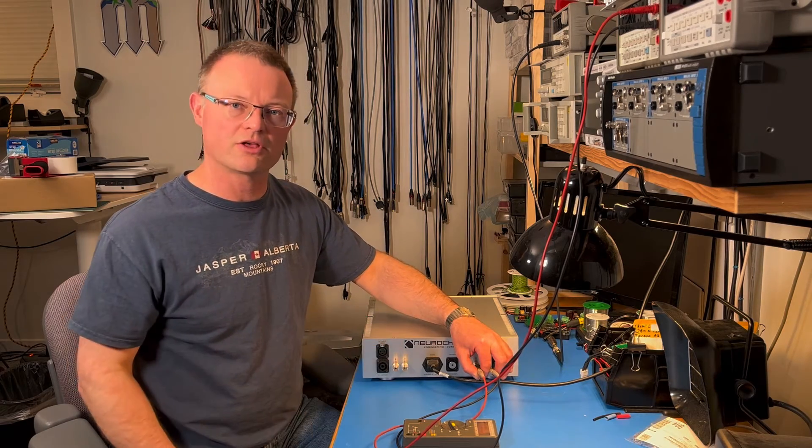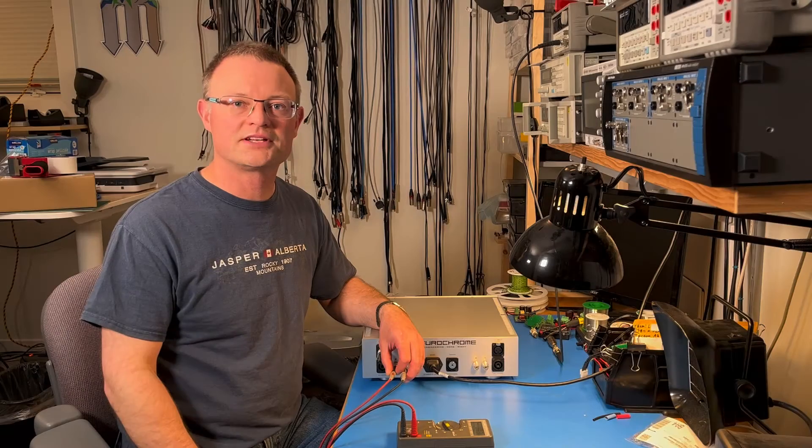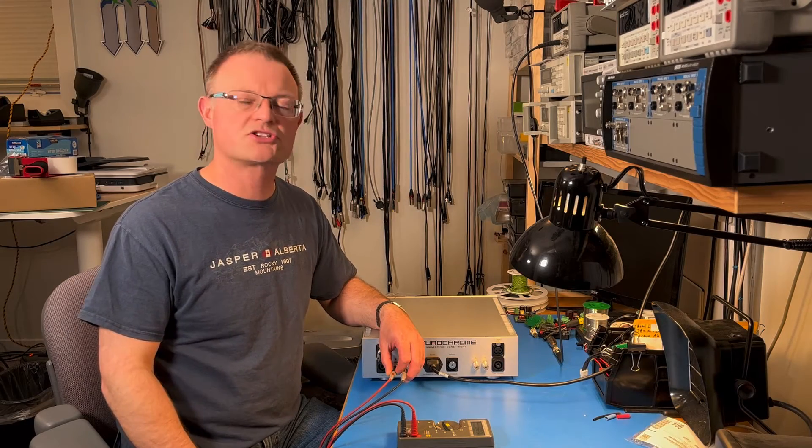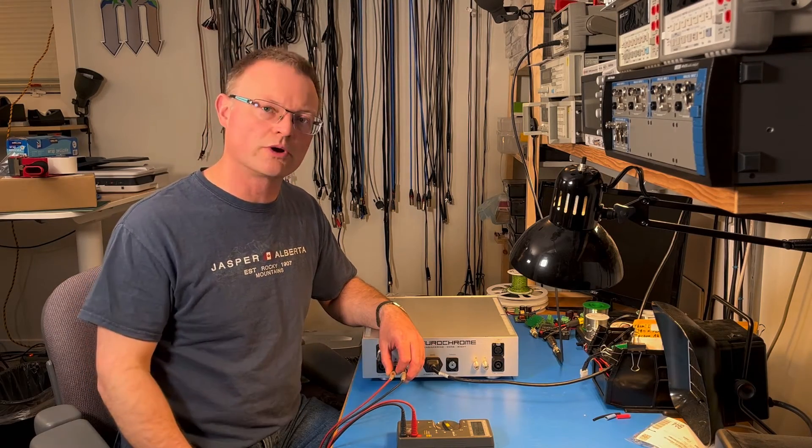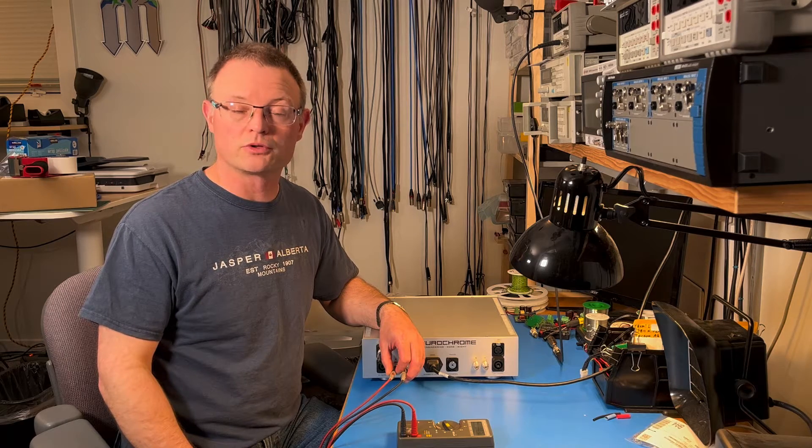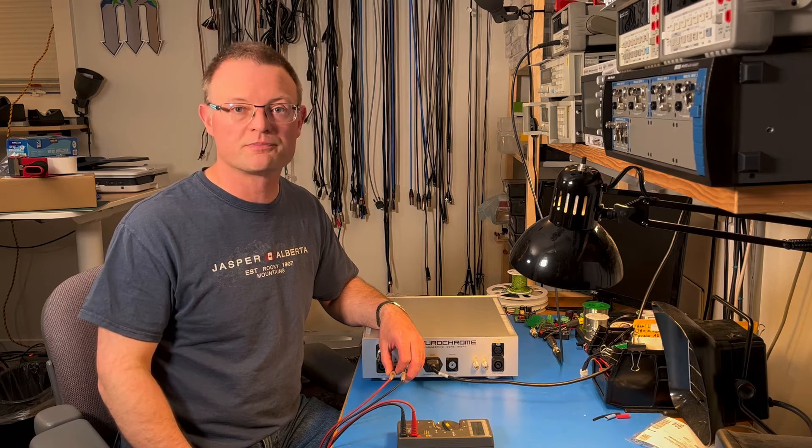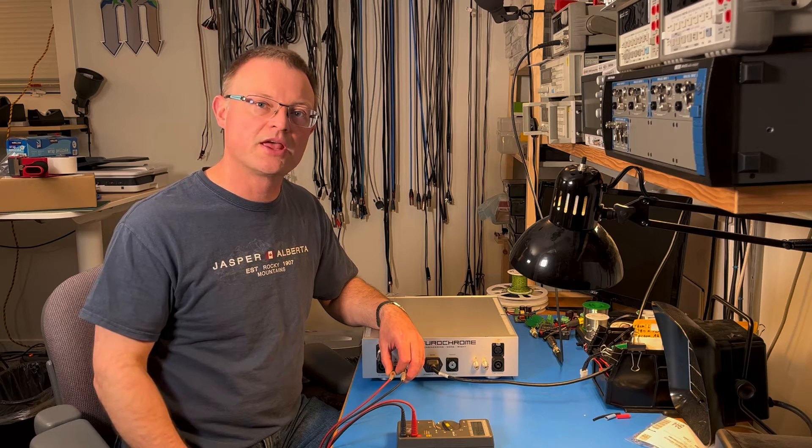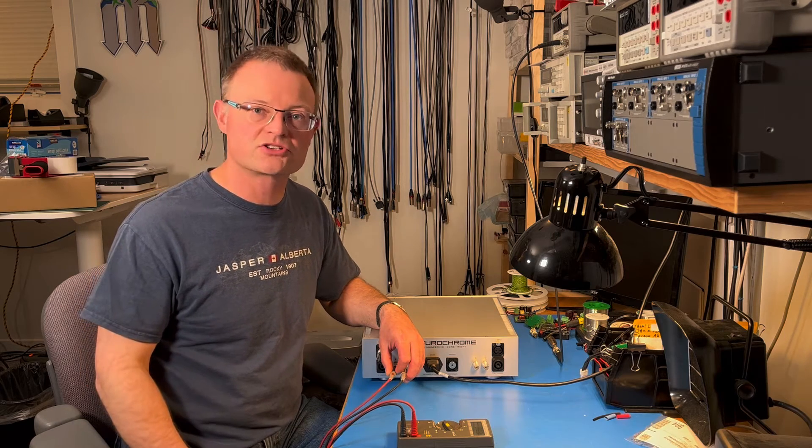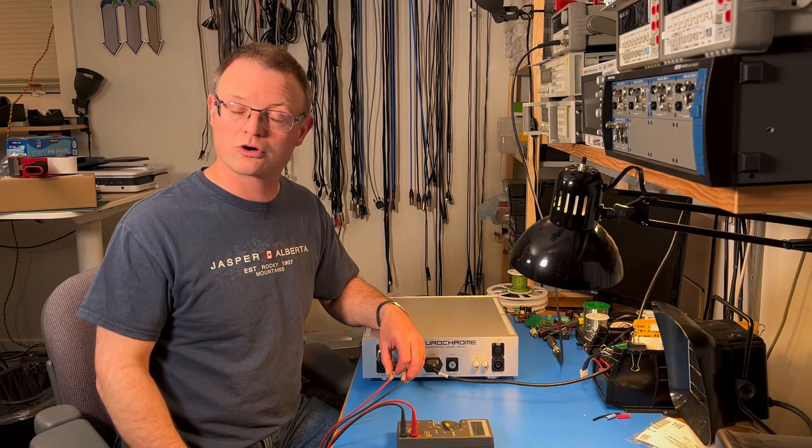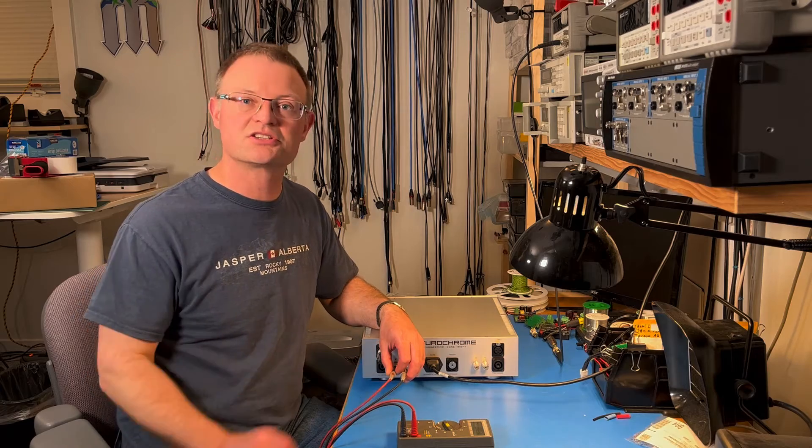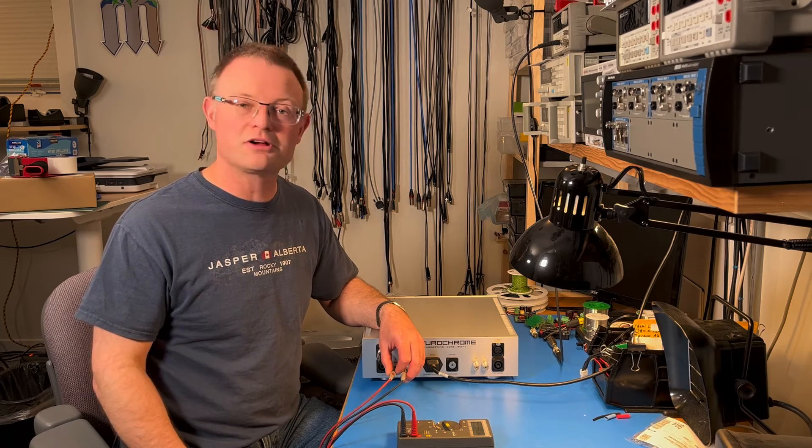Now we just repeat the measurement for the other channel. The DC offset of this channel measures minus 0.3 millivolts or minus 300 microvolts, according to the handheld meter. According to the benchtop meter, it measures minus 324 microvolts. So once again, this 30 year old guy actually holds his own.